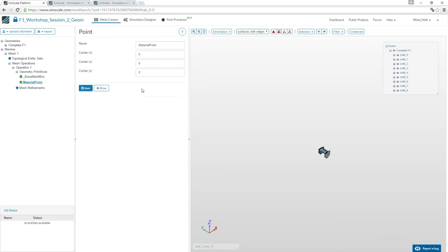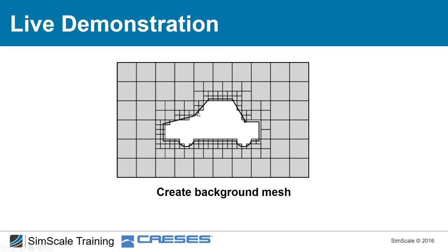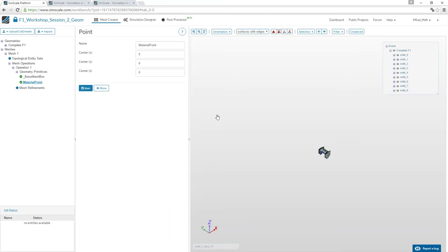Next, define the material point — a location that must lie inside the flow domain but outside the wing geometry. This tells the mesher which region of the mesh to keep after snapping and deleting the interior cells. For our case, a point at approximately (-3, -2, 1) works — it's inside the domain and outside the wing.